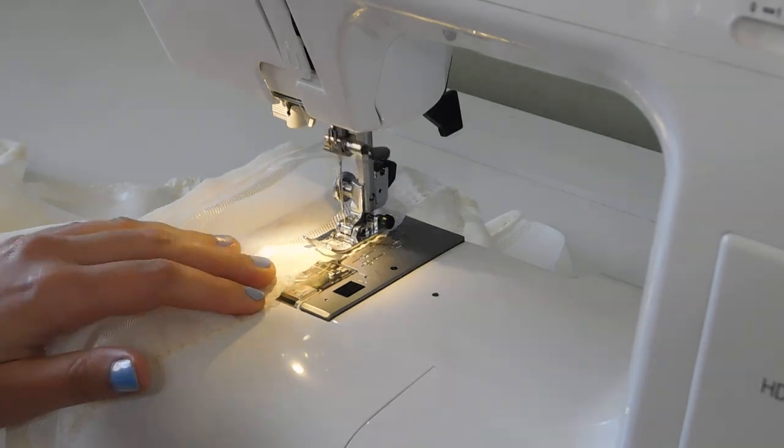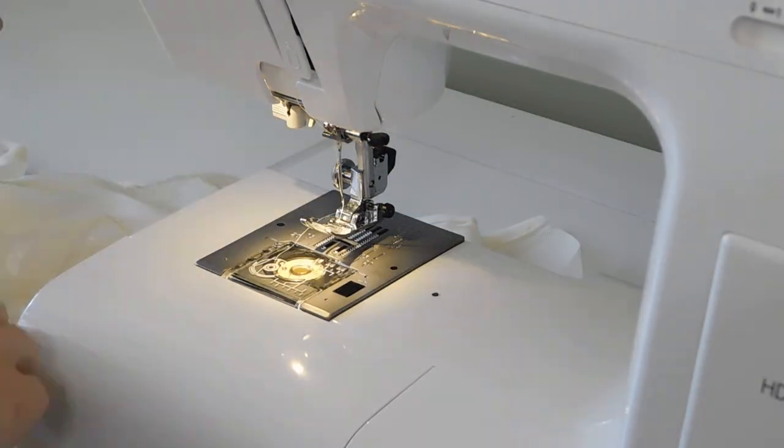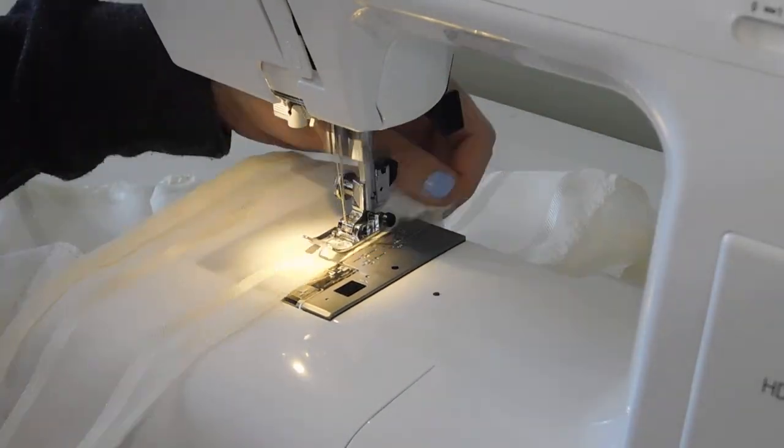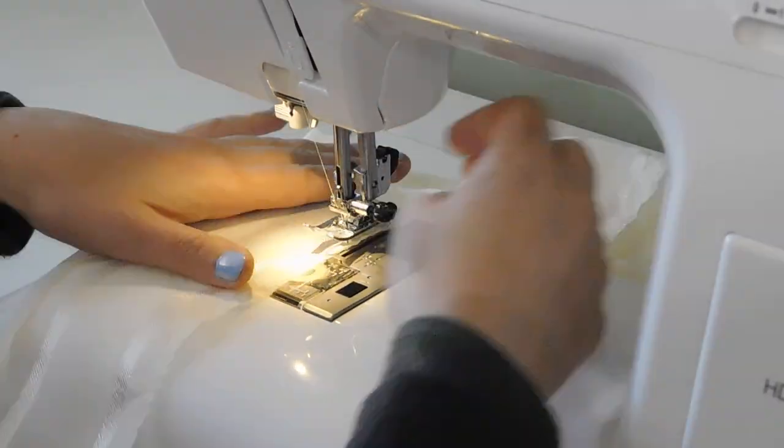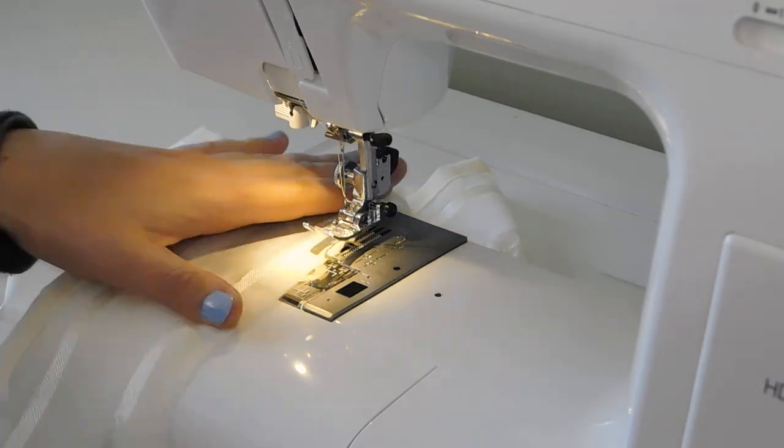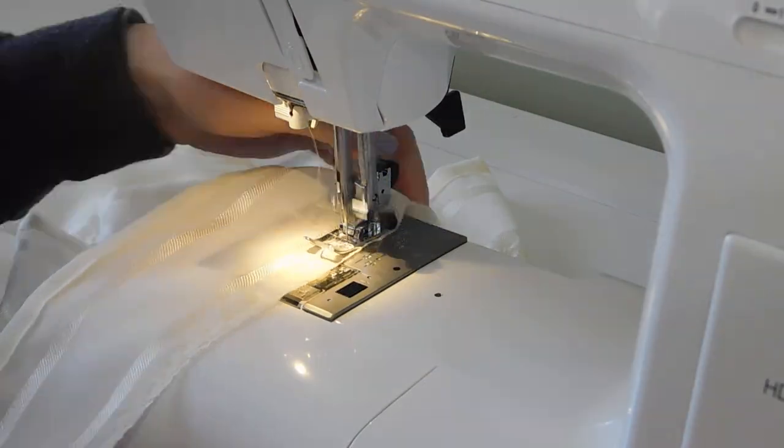On every ruffle I add the base stitch at 4mm length then each quarter of the ruffle will get its own baste stitch underneath that that I will not backstitch on either side so I can use the thread tails to gather down the piece.